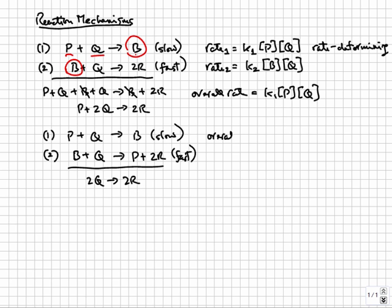Since the slow step in this reaction is the same as the previous one, the overall rate law is unchanged too. So the overall rate must also be equal to K1 times the concentrations of P and Q. Interestingly, even though P doesn't show up in the overall reaction, it affects the rate of the overall reaction. This means that P is a catalyst in this mechanism.